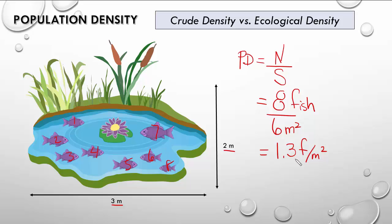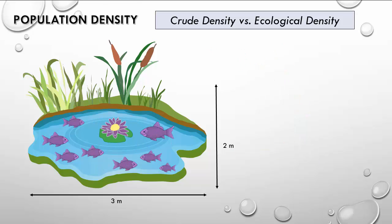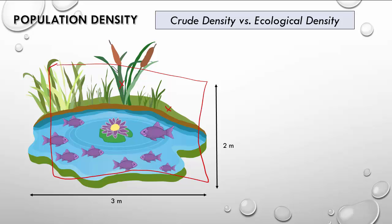That's how we calculate population density — obviously if we had more fish we'd have a larger number per meter squared. The difference between crude and ecological density: what I just calculated was a crude density for the whole area. But the fish are not utilizing the land or the plants — those are still part of the area used in the calculation. Ecological density is the area actually used by the organism, so ecological density will be smaller than crude density.